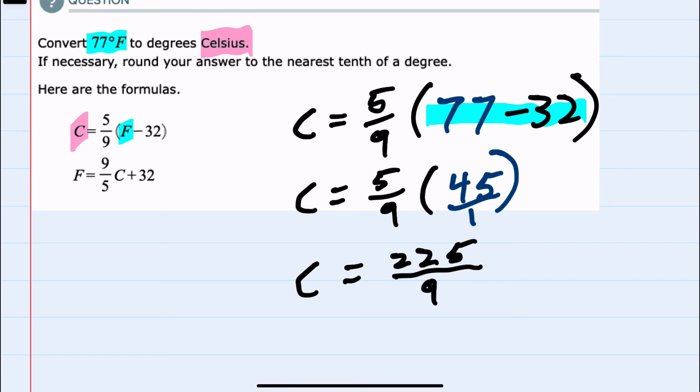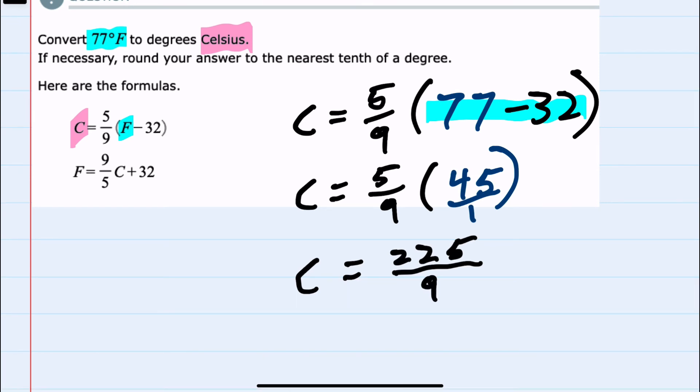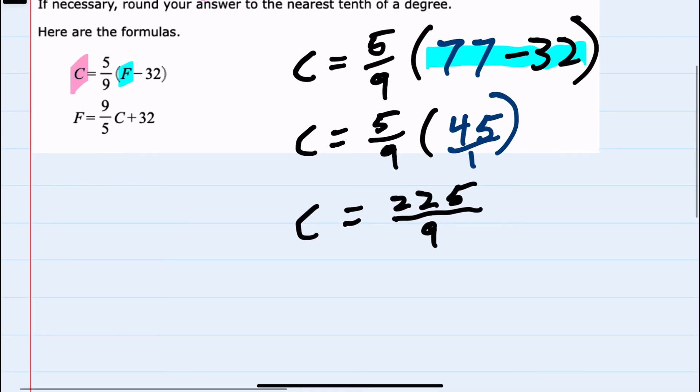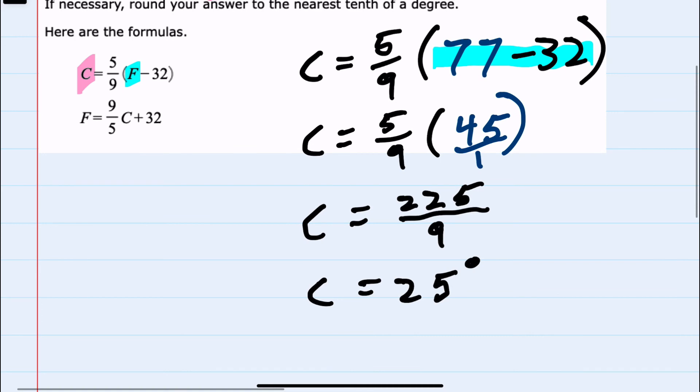And this division, I can use a calculator. We're asked to round to the nearest tenth if needed, but this divides evenly. So our Celsius temperature is 225 divided by 9, or 25 degrees.